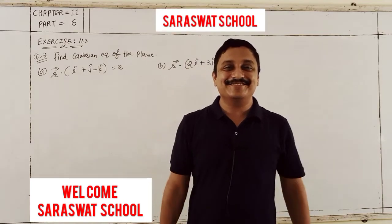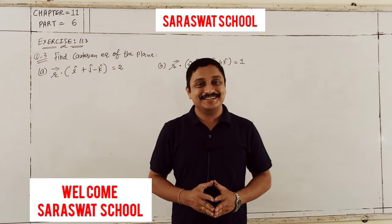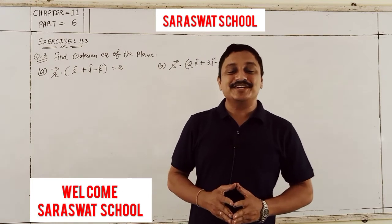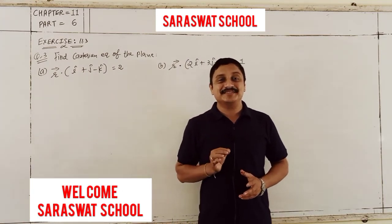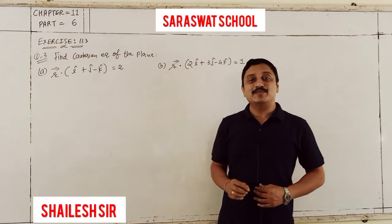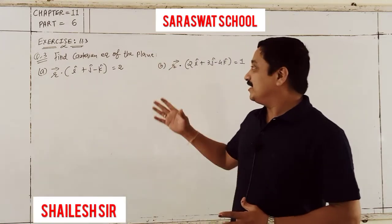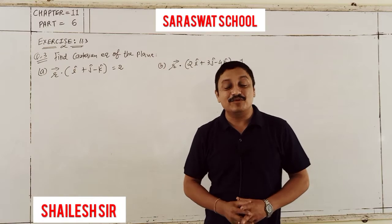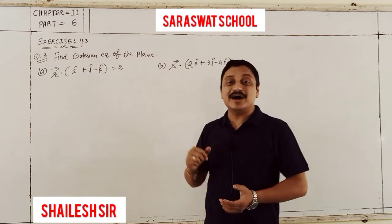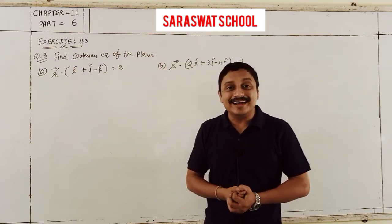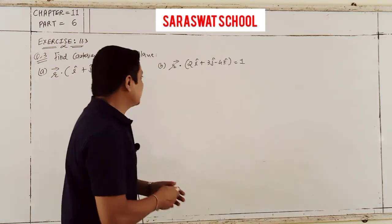Hello students, welcome to chapter 11, 3-Dimension Geometry. Today I continue our plane in space related exercise 11.3, question number 3. Find the Cartesian equation of the plane for the following given planes in the form of r dot (i plus j minus k) is equal to 2. Very easy students.